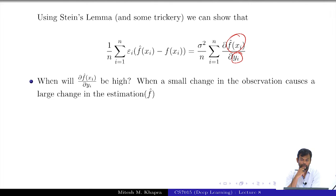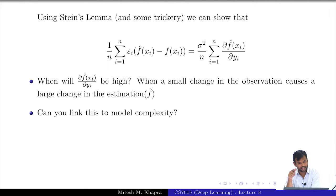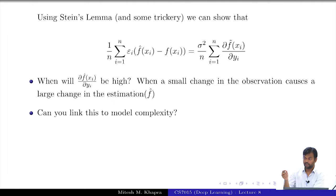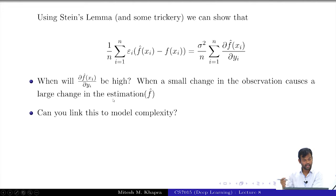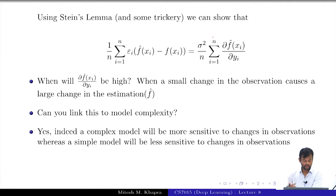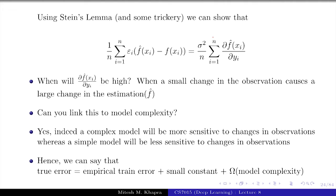When would this happen — for simple models or complex models? Complex models. This is the link to model complexity: if your model is very complex, then if even one of your data points changes, the prediction of the model is going to change largely. Relate this back to the sinusoidal model — models trained on different sets of 25 examples were vastly different. A complex model will be more sensitive to changes in observations, whereas a simple model will be less sensitive. Hence the true error equals the empirical train error plus something related to model complexity.